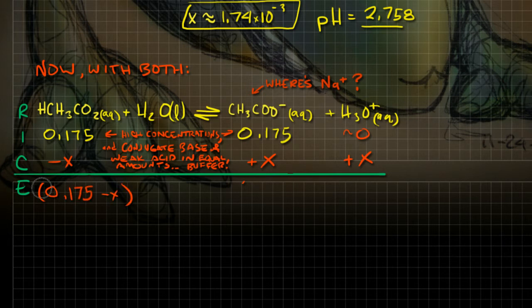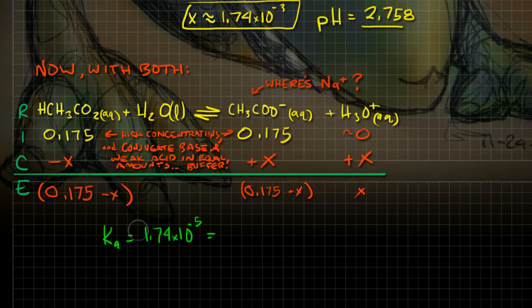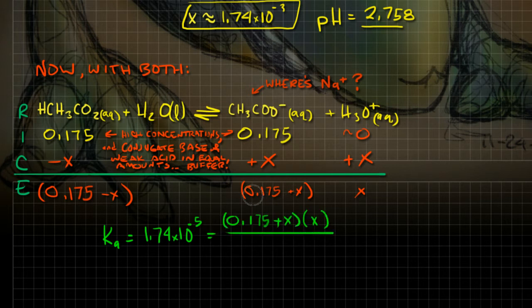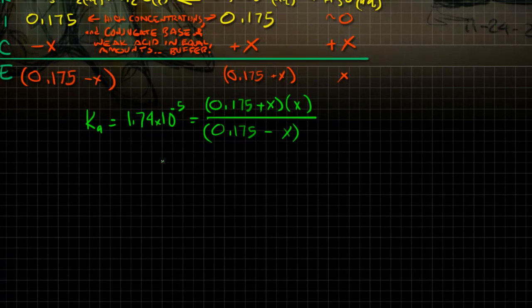Something you need to notice right away is that the concentrations of both of these are the same, and this is the conjugate base of this acid. That means we're dealing with a buffer. Adding them together, this is the concentration of my reactants when I hit equilibrium. When I have products and reactants, I can use my acid constant to solve for the concentration of hydronium ions.